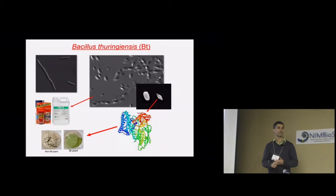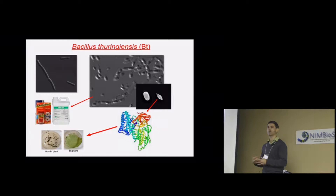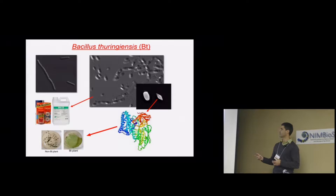Bacillus thuringiensis, or Bt, is a Gram-positive bacterium that is very common in the soil. Here is the bacterium in the vegetative stage. When nutrients go scarce or there are adverse environmental conditions, the bacteria undergoes sporulation, forming a spore and a crystal. You can see the spore and the crystal here inside the sporangia.